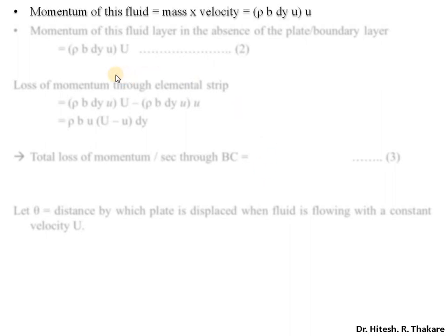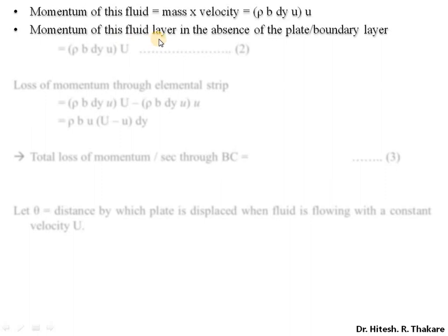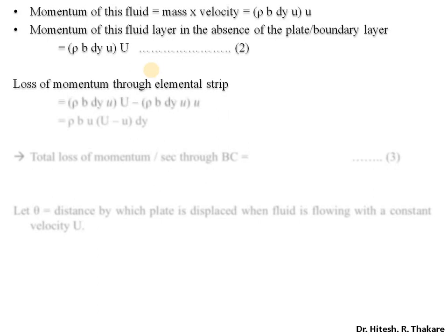Since we are interested in momentum thickness, we will talk about momentum in this derivation. The momentum of this fluid is simply mass flow rate multiplied by velocity. Now if there was no plate, no boundary layer, then the momentum of this same fluid layer would have been the original mass multiplied with the free stream velocity U instead of the local velocity u. This quantity is larger, while the actual momentum quantity is smaller, so we calculate the loss of momentum through the strip.